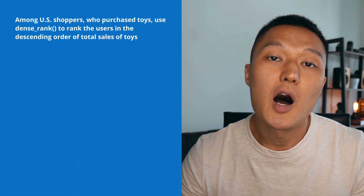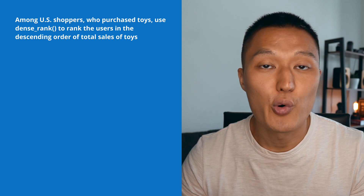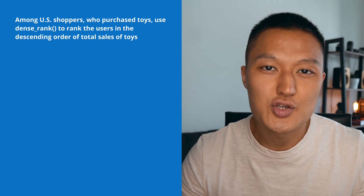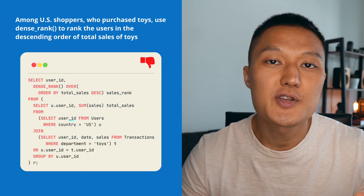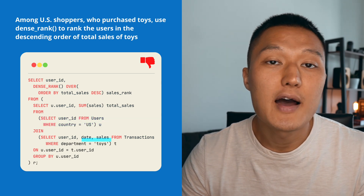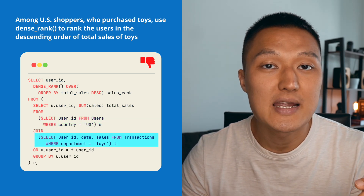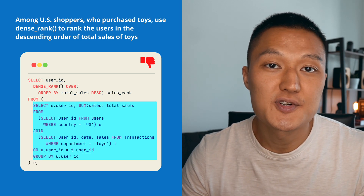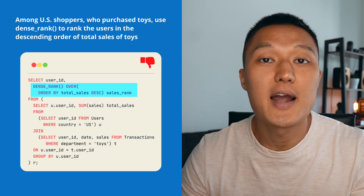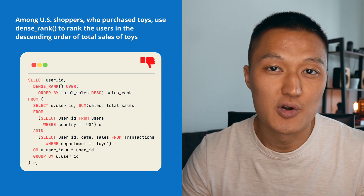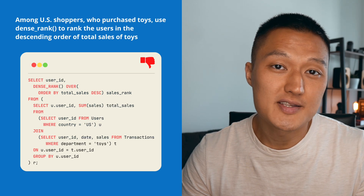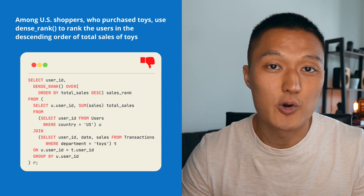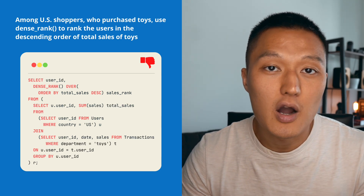For instance, suppose you need to solve this problem: among US shoppers who purchase toys, use DENSE_RANK to rank the users in descending order of total sales of toys. You have to first filter the users table based on US users, filter the transaction table based on the toys department, join these two and aggregate the sum based on users, followed by DENSE_RANK applied on total sales in descending order. As you can see, the query is somewhat convoluted, and with a more challenging problem requiring additional subqueries, it becomes even more so.